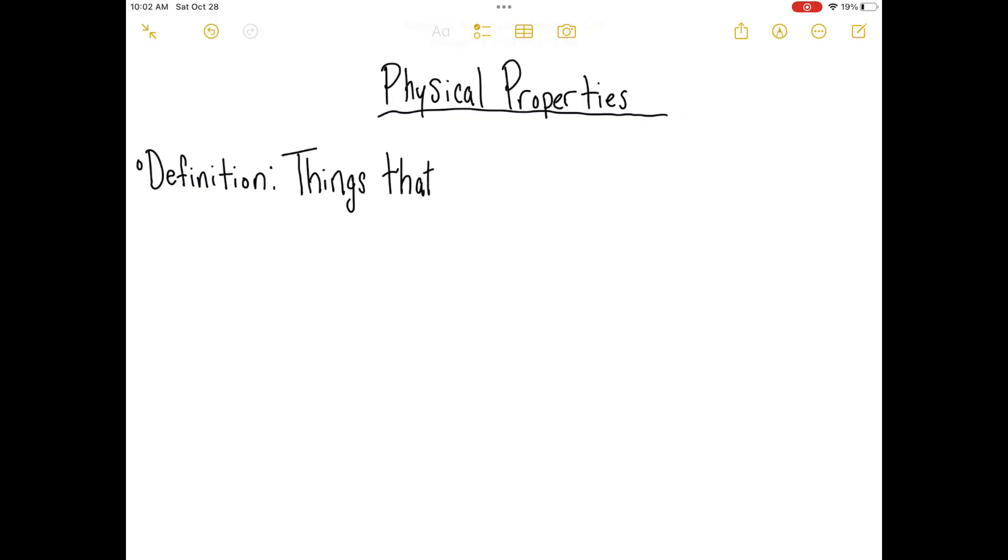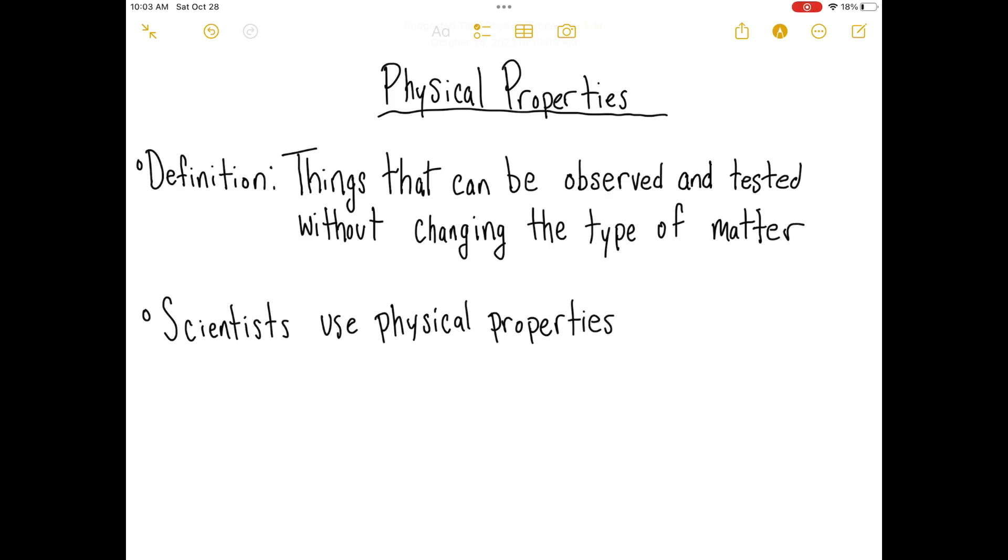A physical property is something that can be observed or tested without changing the matter itself. Scientists use physical properties to identify pure substances and to also figure out what the best material for an object that they're building is.